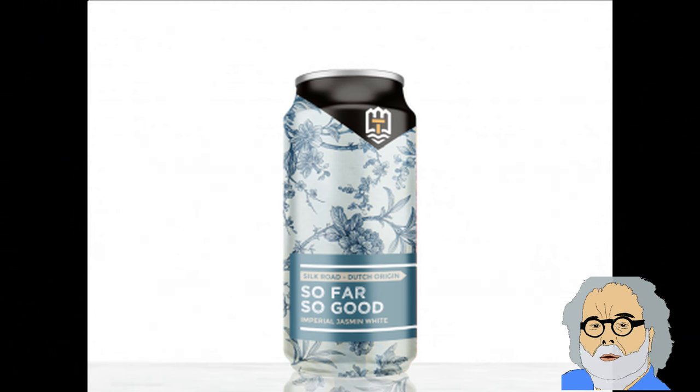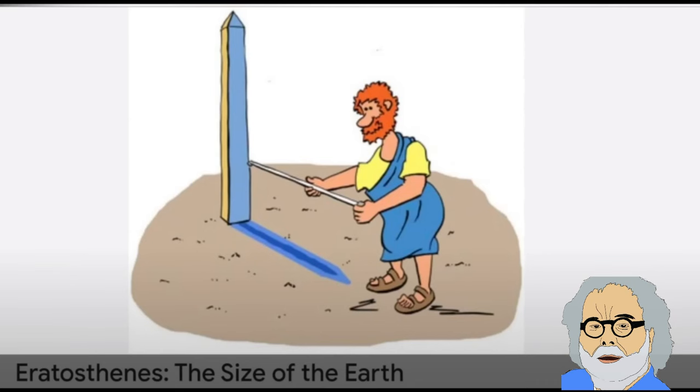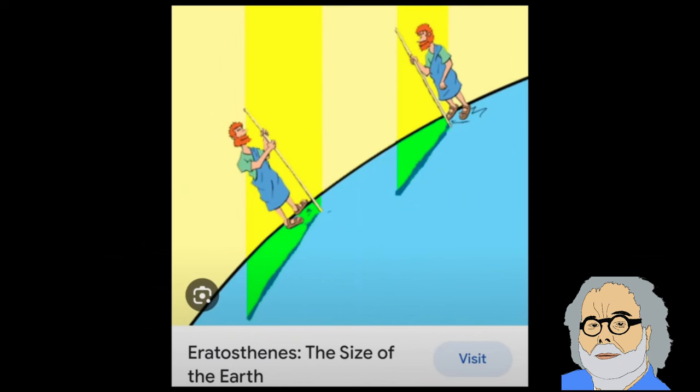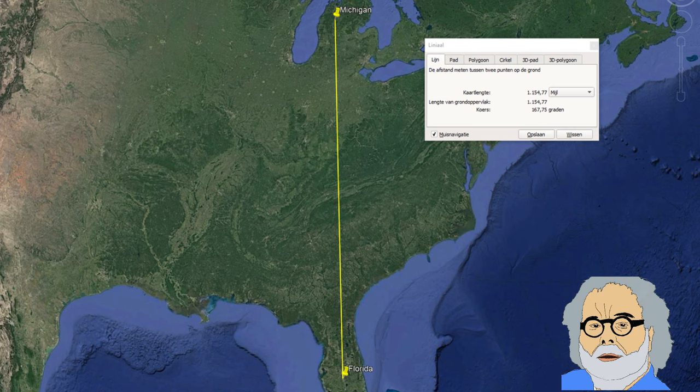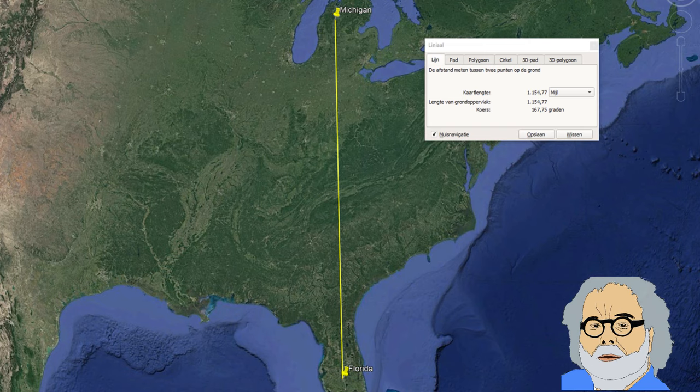Simon Dann complains about it not being an exact replica of Eratosthenes because it wasn't done at the summer solstice and one of the locations wasn't at the Tropic of Cancer. Then he states that the locations Michigan and Florida—Baer didn't mention the precise locations, which is typical for a flat earther—aren't exactly at the same longitude line.